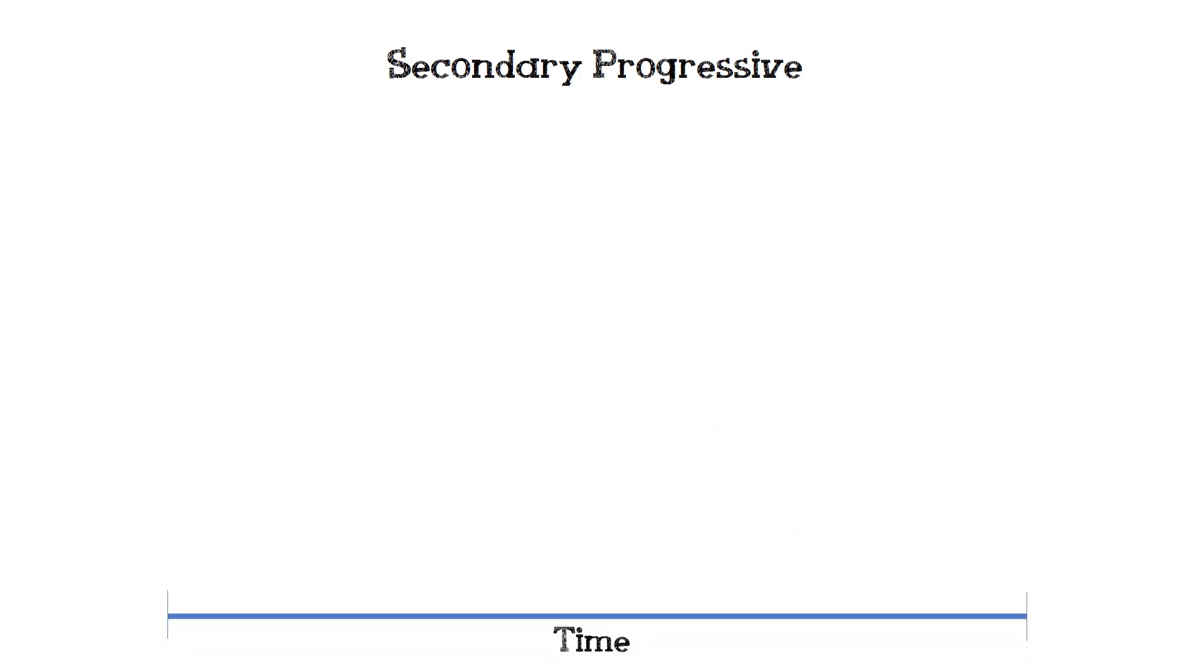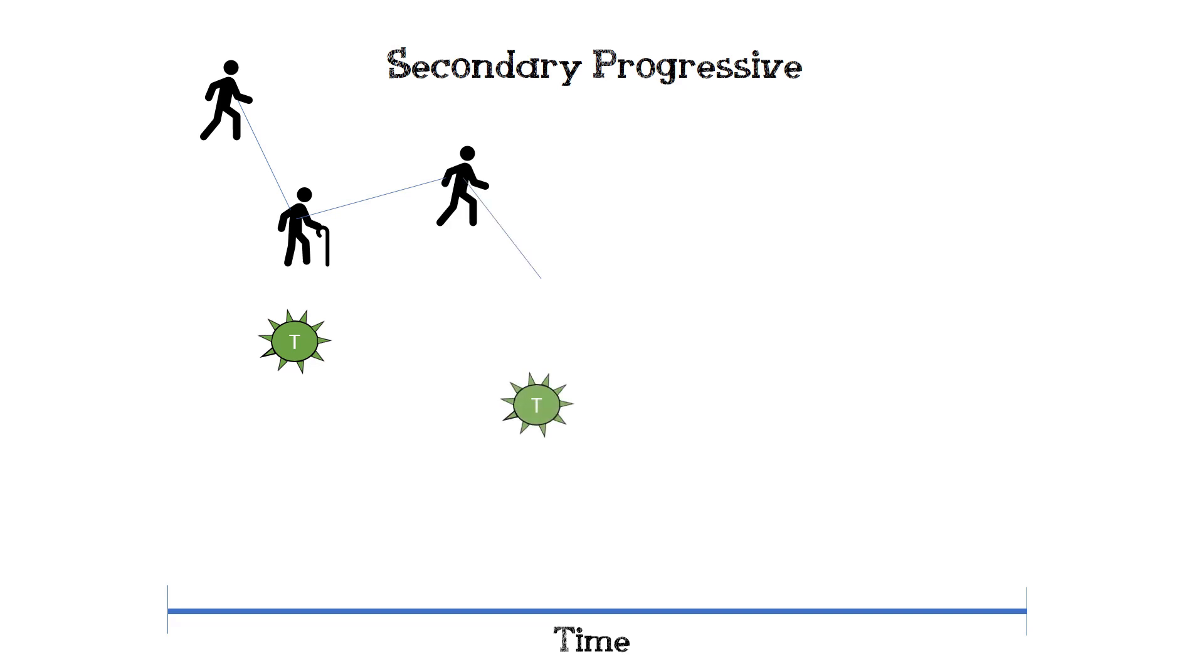Secondary progressive starts in the same way as relapsing and remitting, but turns into primary progressive as time passes.